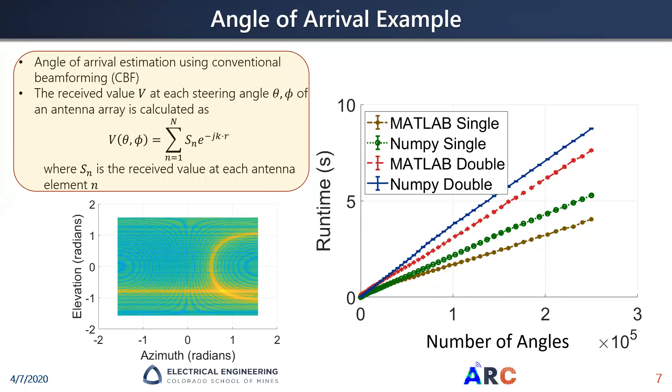We can then look at an angle of arrival simulation, and what this is, we're seeing where our incoming wave is onto an antenna array, and so using the equation you see here, we have a summation, along with a multiplication and an exponentiation, so we'd expect to see similar runtimes between MATLAB and Python. For small runtimes, we see that Python actually outperforms MATLAB, but for a larger number of angles, we see that MATLAB outperforms Python in those cases, but they're both very similar in their runtimes.